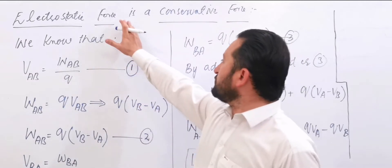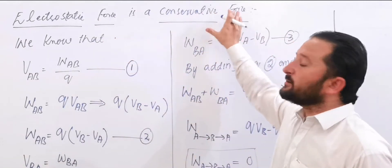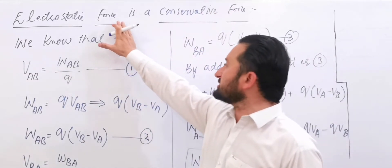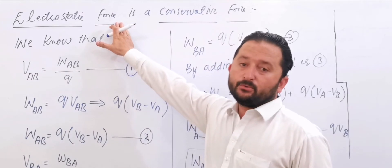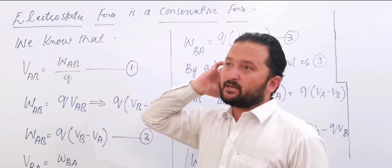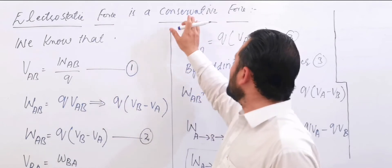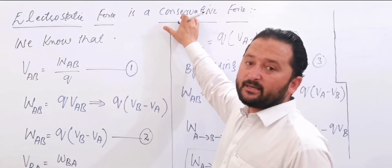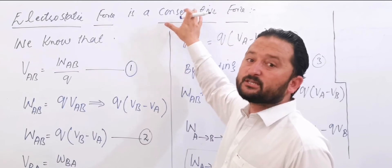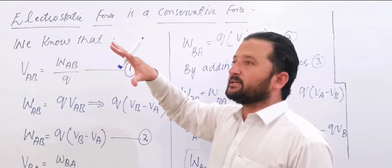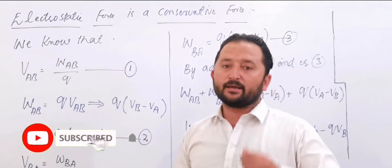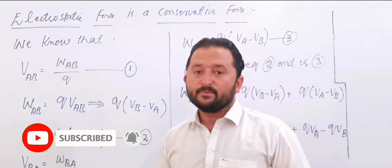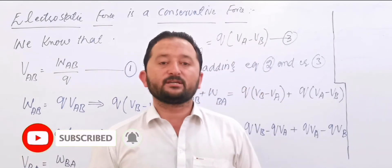Electric force is a conservative force. For a conservative force, the work done by a closed path must be zero. Work done by closed path is zero or work depends on the path.